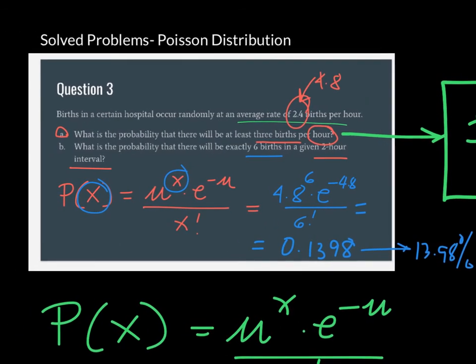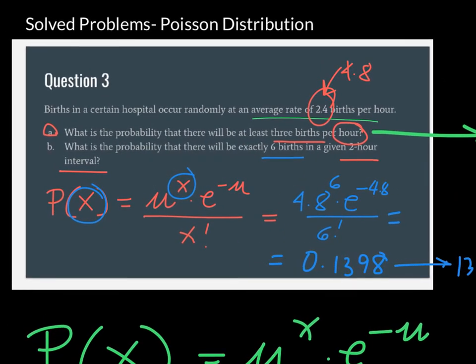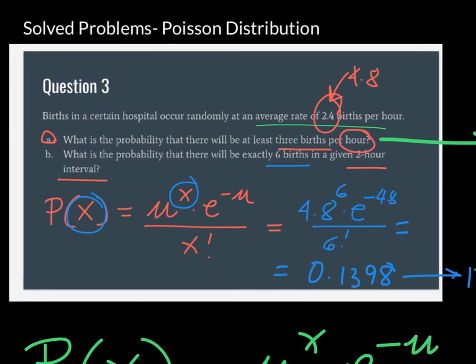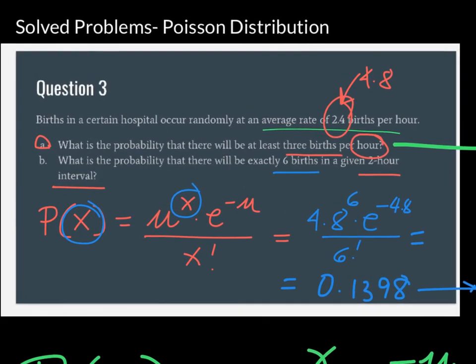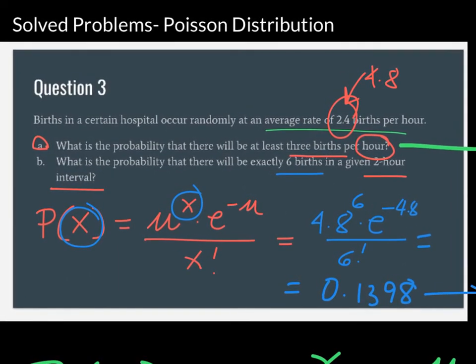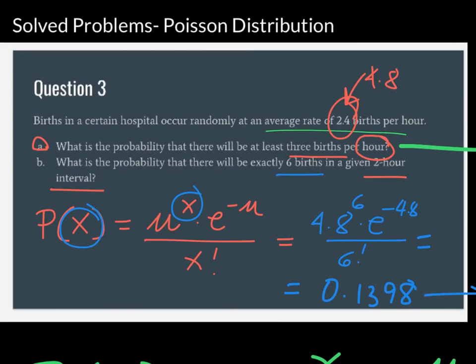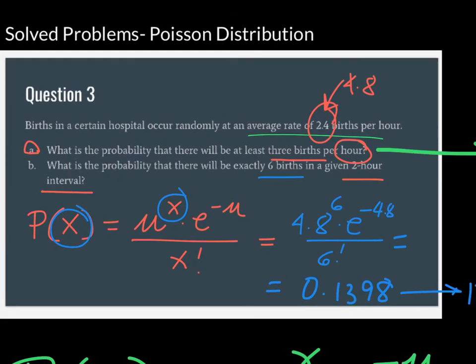Although not listed in this task, you might also encounter a case asking for a 30-minute interval. If 2.4 is the average per hour, then every 30 minutes the average is 1.2. So if you have twice the interval, double the mean; if you have half the interval, take half the average. Just adjust the mean based on the given time interval.